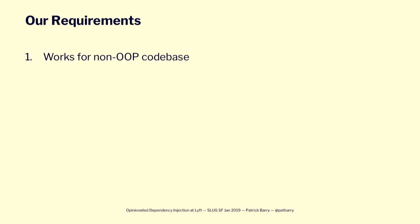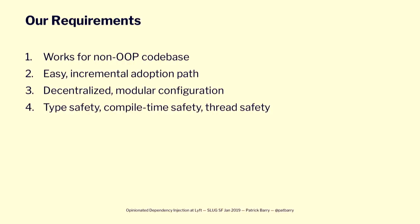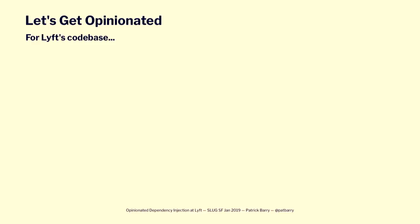We have some must-haves — requirements. These are things any solution must give us or it's not going to work. It needs to work for the non-OOP parts of our code base — protocol extensions, static functions, and all that kind of stuff — so you can't assume everything's an object with an initializer. We need an easy incremental adoption path: we have 300,000 lines of code, we're not going to rewrite it all, and we're certainly not going to stop shipping in the meantime. We need a decentralized and modular configuration given our 300 modules. And we absolutely need type safety, compile-time safety, and thread safety — we don't like finding things out at runtime.